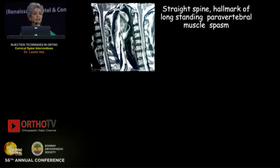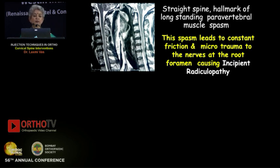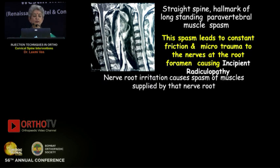When I see a straight spine, it is the hallmark of long-standing paravertebral muscle spasm. This spasm is very real — it is not secondary. It is a primary feature of all disc and facet pathologies. It leads to constant friction and microtrauma to the nerves at the root foramen, causing incipient radiculopathy. This is the spondylosis: there is no disc herniation, but there is a radiculopathy.